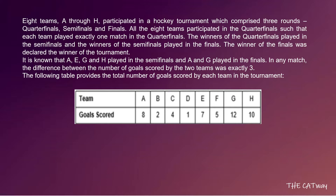The winner of the finals was declared the winner of the tournament. It is known that A, E, G, and H played in the semi-finals, and A and G played in the finals. In any match, the difference between the number of goals scored by the two teams was exactly three. The following table provides the number of goals scored by each team in the tournament.